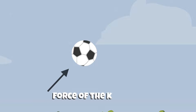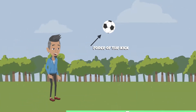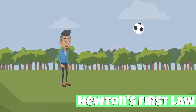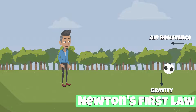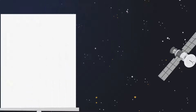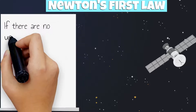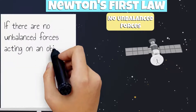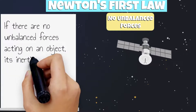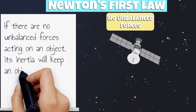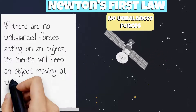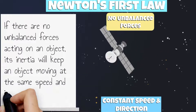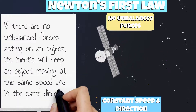The force of the kick will send the ball flying through the air, which eventually will be slowed down by air resistance and gravity. If there are no unbalanced forces acting on an object, its inertia will keep an object moving at the same speed and in the same direction.